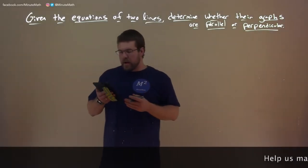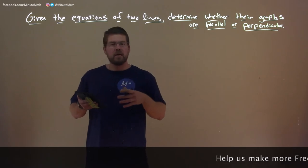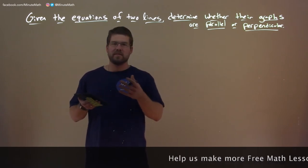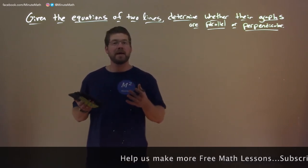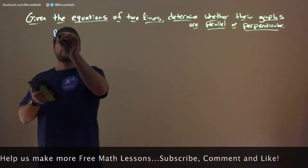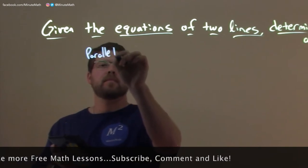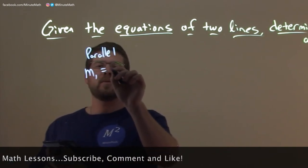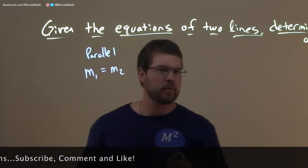So one thing we want to note here is what do we know about parallel lines, perpendicular lines, or if it's neither one of them. Parallel lines have the same slope. So if it's parallel, slope 1 will equal slope 2 over two lines.